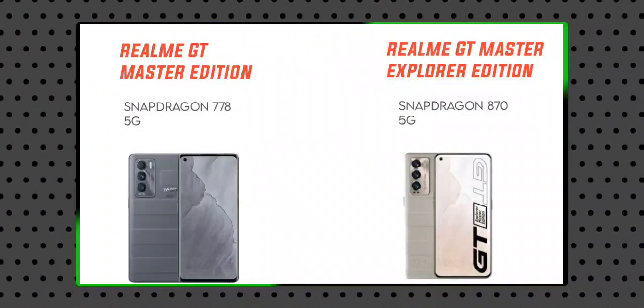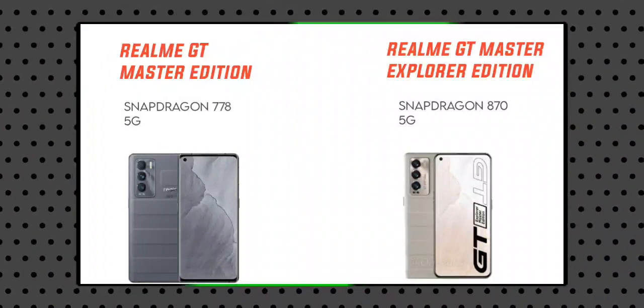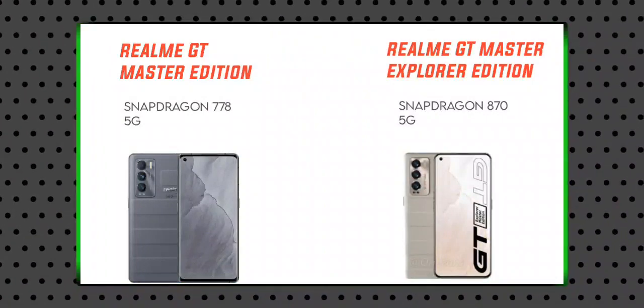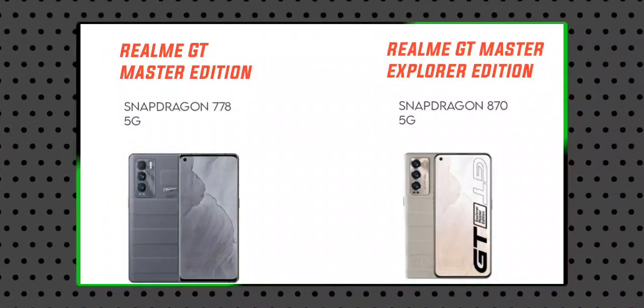The Realme GT Master Edition uses a Snapdragon 778G 5G processor, while the Realme GT Master Explorer Edition uses a Snapdragon 870 processor. The 870 is a newer, more powerful processor compared to the 778G.